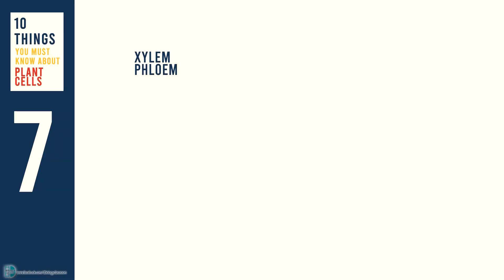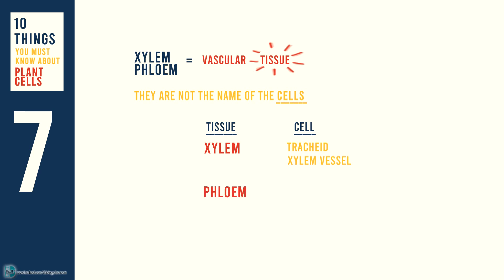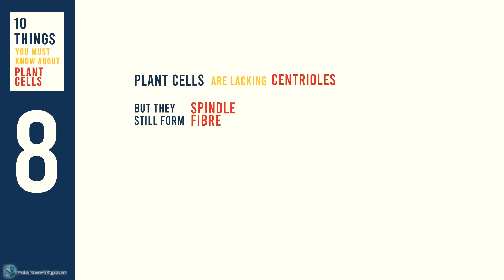Xylem and phloem are two types of vascular tissue — they are not the names of cells. Xylem tissue is made of cells called tracheids and xylem vessels, while phloem is mainly made up of cells known as sieve tube elements and companion cells. Plant cells are lacking centrioles, but they still form spindle fibers during mitosis.